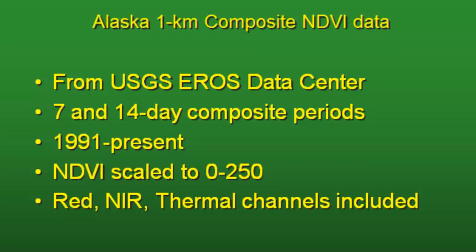We're also going to work with a one-kilometer composite data set for Alaska. You can access it for free from the USGS EROS Data Center, and it's available as weekly or two-week composite data all the way to the present. It includes 14 bands: the red band, the near-infrared band, the NDVI band, thermal bands, cloud screening bands, et cetera. The last exercise this week will use this Alaska one-kilometer AVHRR data.